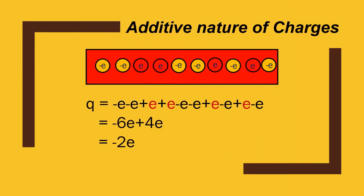The additive nature of charges can be explained like this: if there are 10 charges in an object, say 4 are positive and 6 are negative, then the algebraic sum of the charges is the total charge q. That is, q is equal to minus 6e plus 4e, which is equal to minus 2e.